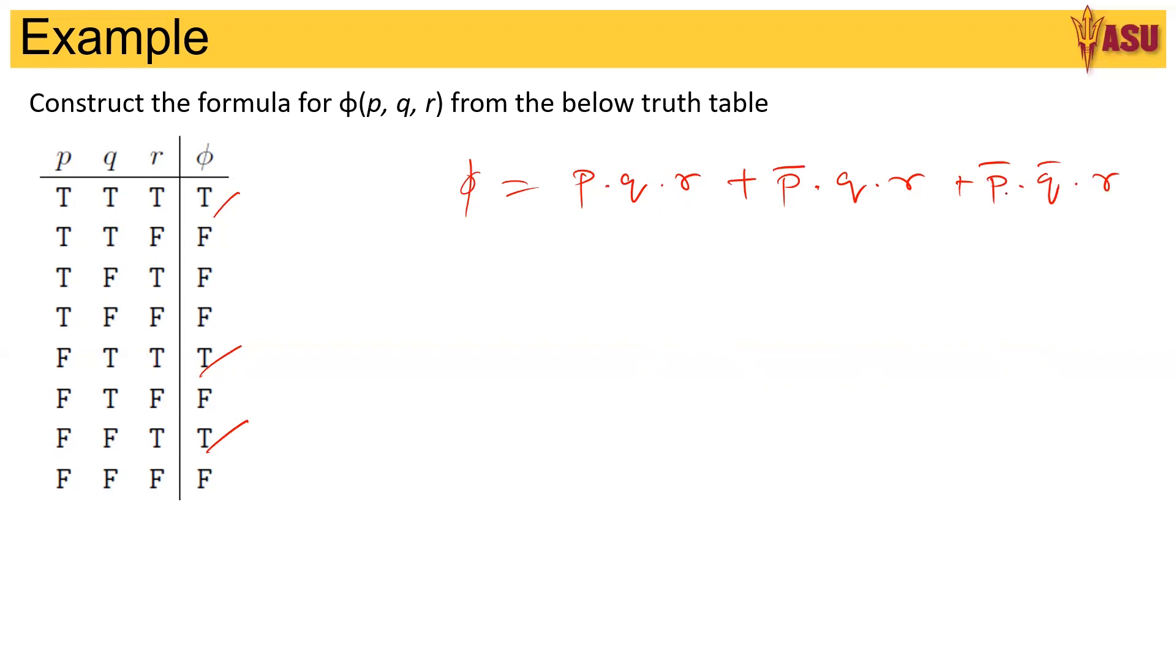Then we see that r is common, taking it out you get p·q + p̄·q + p̄·q̄ times r. And we also can take out the q common here. So q·(p + p̄) + p̄·q̄ times r.